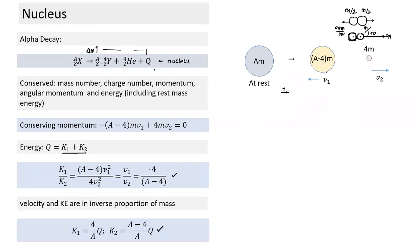Since there is nothing else to share the energy — no EM radiation — all alpha particles emitted from the same decay will have almost the same kinetic energy. The major portion of Q value is in the form of kinetic energy of the alpha particle, and all alpha particles will have almost similar kinetic energy.